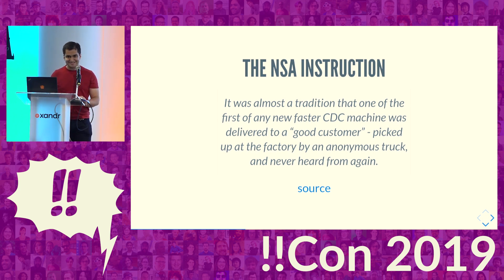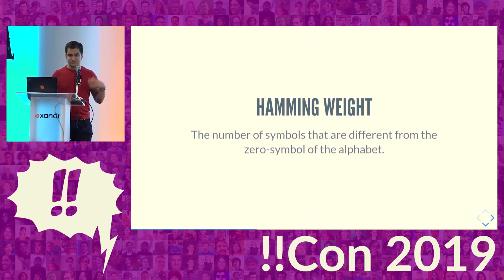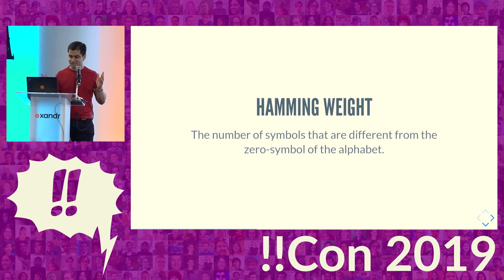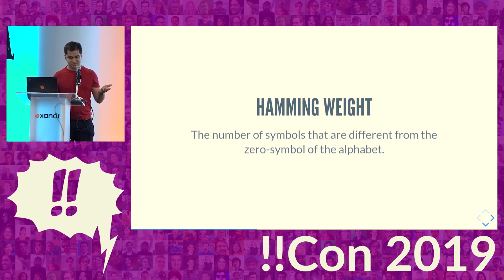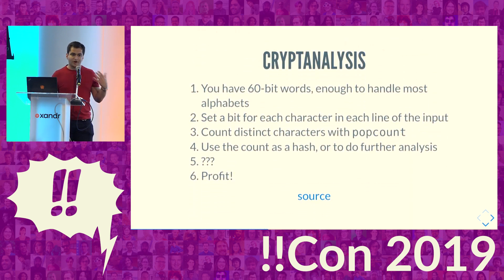But why does the NSA need this instruction? To answer that, I'm going to tell you about the concept of hamming weight. Hamming weight is: you take a string of some alphabet — a set of possible symbols — and count the number of symbols that are not the zero symbol. For binary strings, which are just ones and zeros, this is exactly pop count.